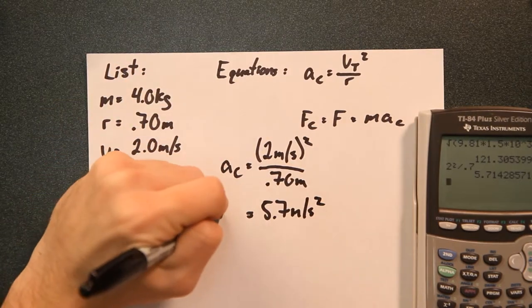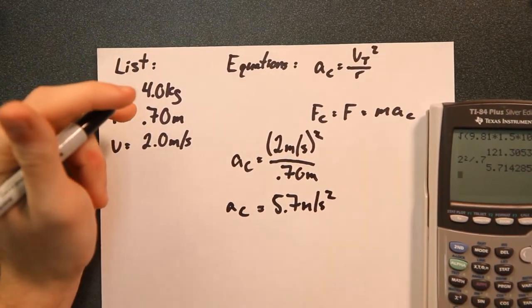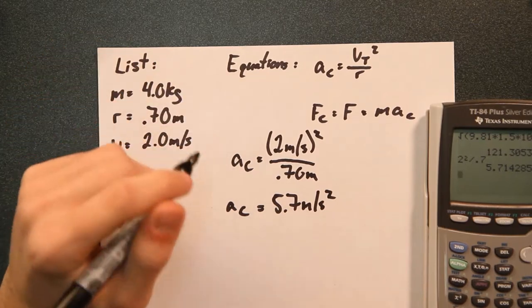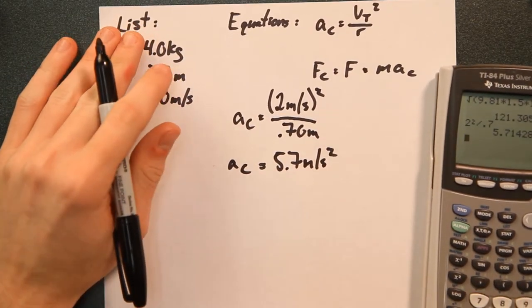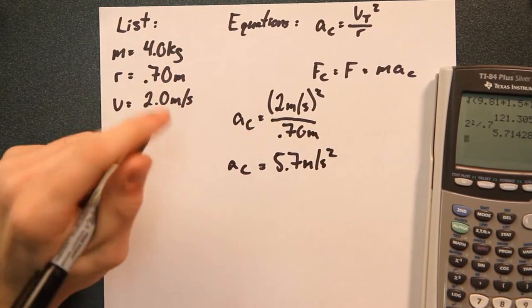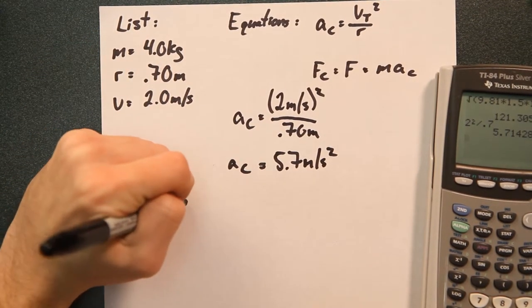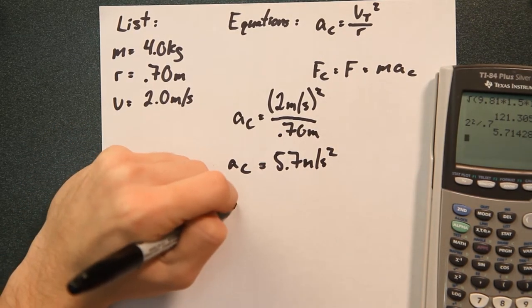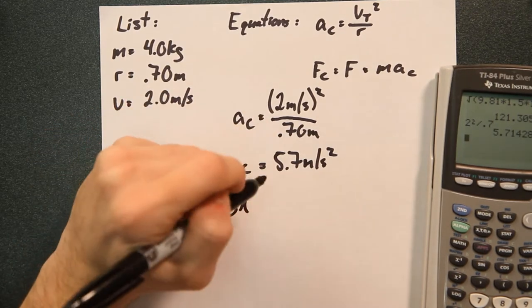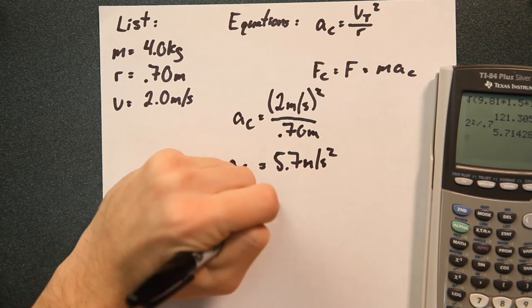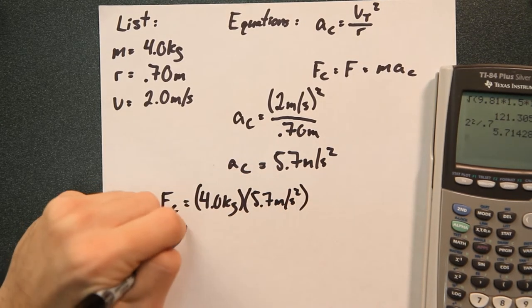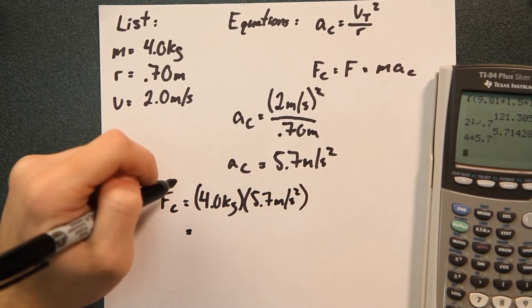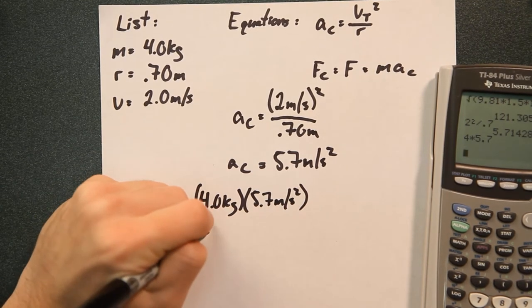So that's our acceleration. Then we're going to use that value to determine the centripetal force. The centripetal force equation is just mass times acceleration. So we're going to go ahead and take the value that we just got here. So we're going to have f sub c is equal to 4 kilograms times our 5.7 meters per second squared, which is going to give us an answer in newtons here. So we have approximately 23 newtons.